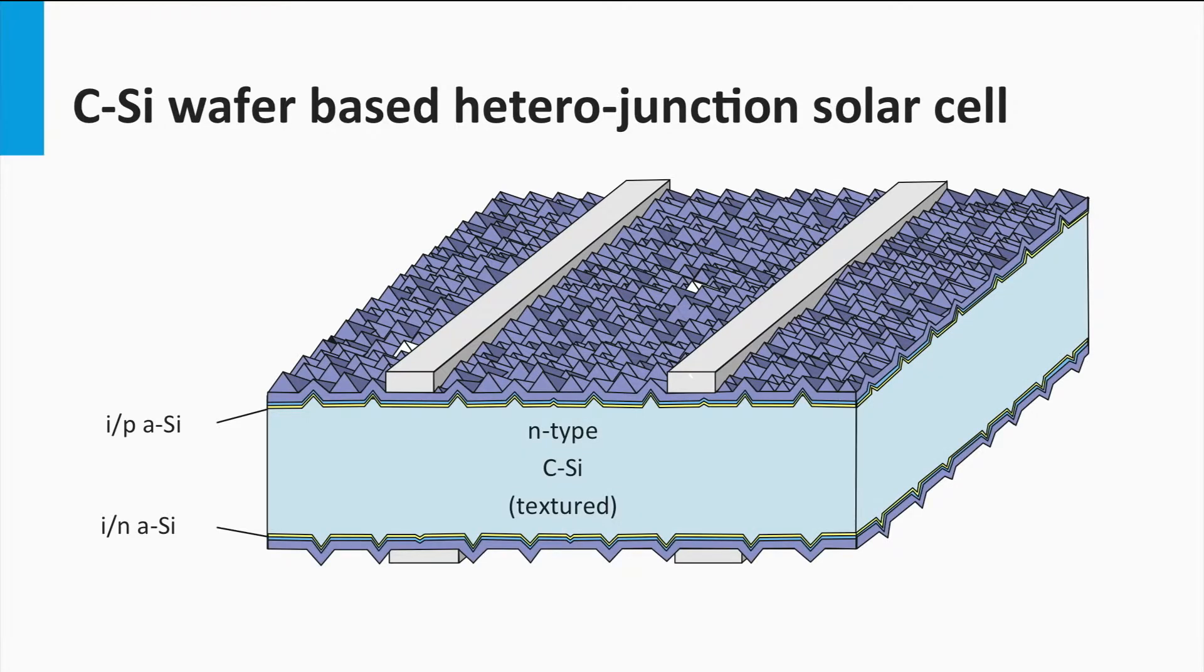An advantage of the HIT cell concept is that it allows to introduce the same contact scheme at the backside. It means that this solar cell can be used in a bifacial configuration. It can collect light from the front and scattered and diffuse light falling on the back side of the solar cell.